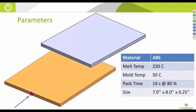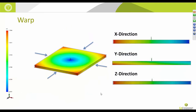As for the molding parameters: we selected a generic gate location at the end of the part. The material was ABS pulled from our plastics material database, melt temperature was about 230°C, and mold temperature was maintained at a uniform 50°C. We packed for about 14 seconds at 80% of max injection pressure. The part size is approximately 7 by 8 by one-quarter inch.